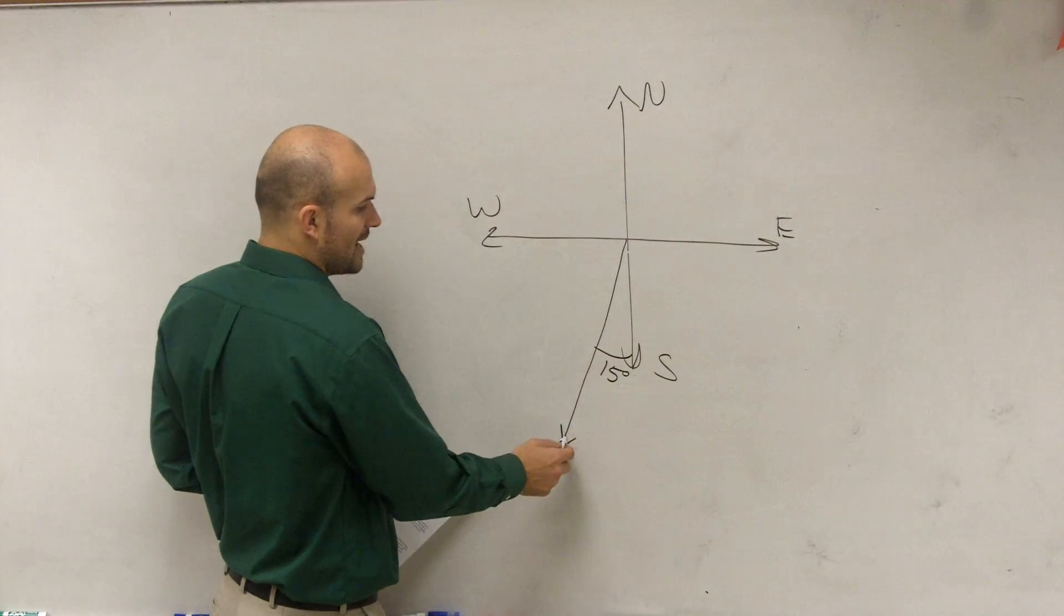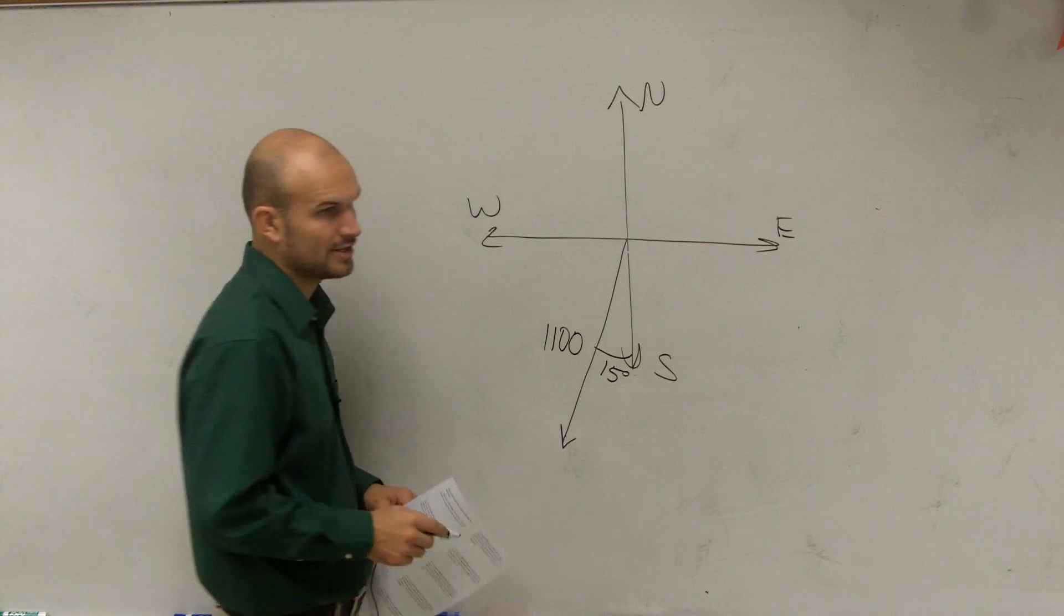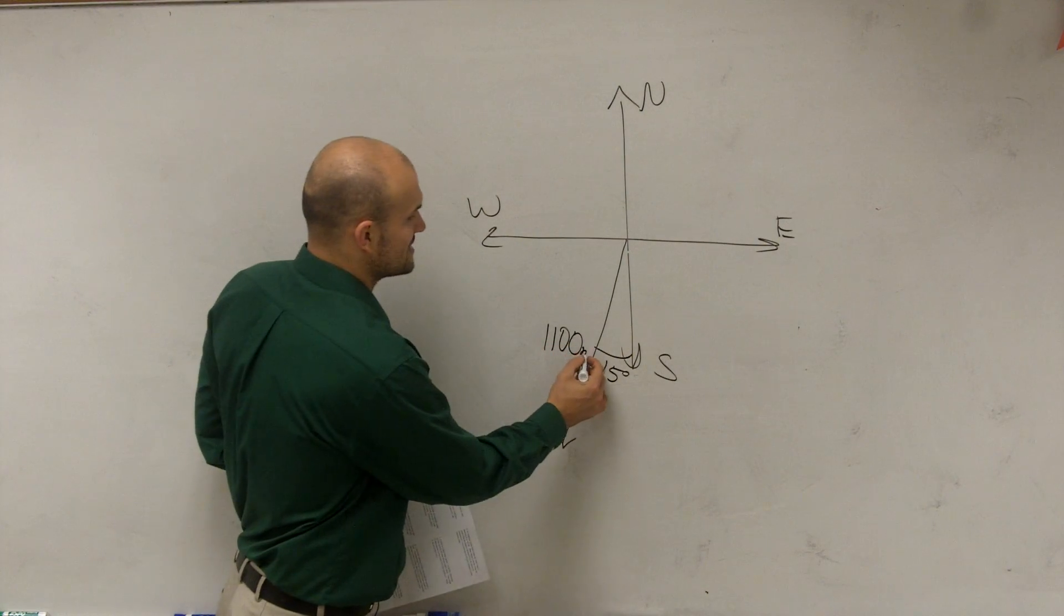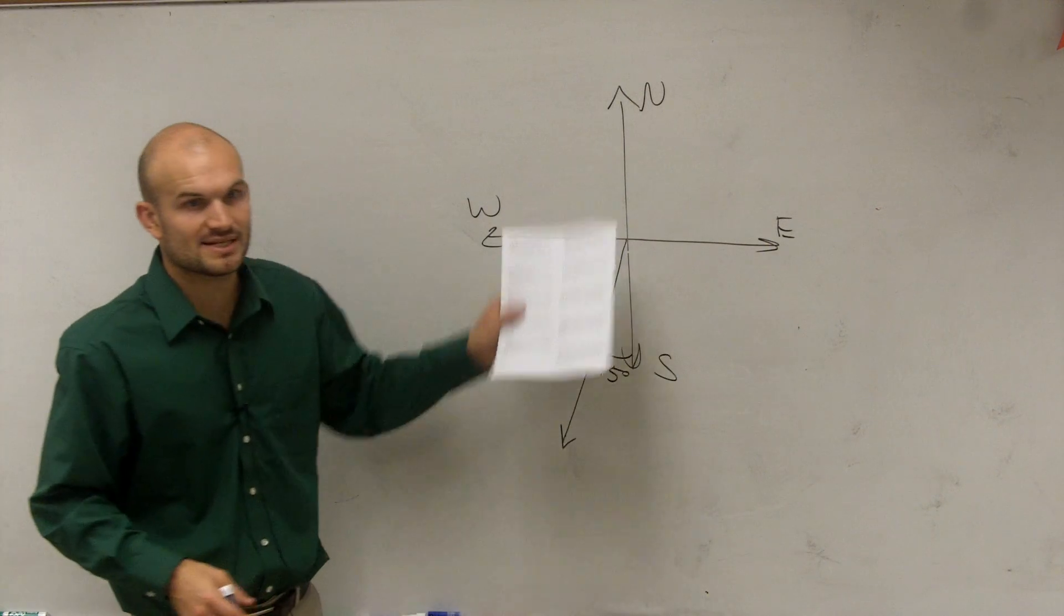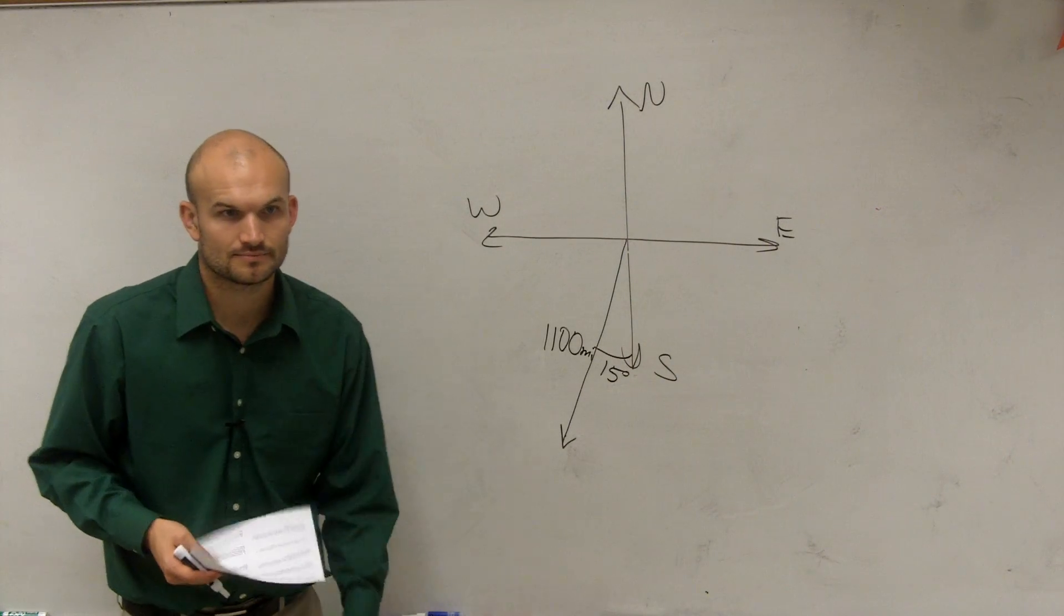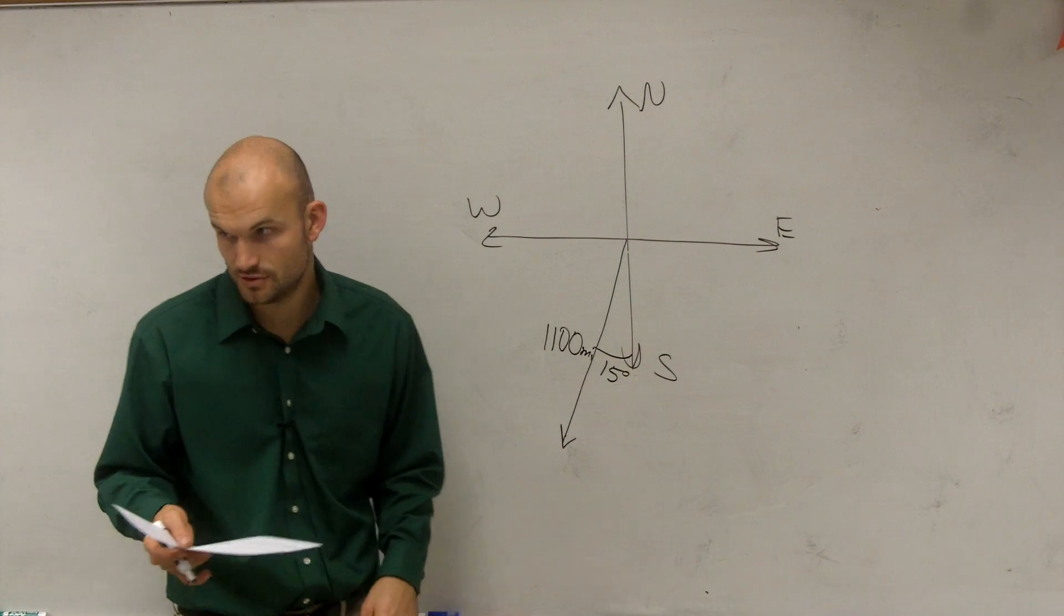So let's say at 2 hours, it went 1,100. That's your miles. That's the distance right there. So that is my distance on that arc. That's for 2 hours.